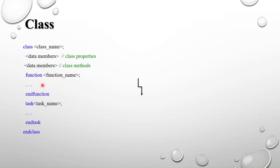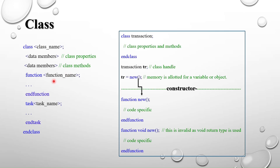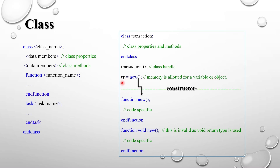Now we will see the constructor. When we write 'class transaction', and then 'transaction tr', that tr is the handle pointing to the transaction class object. We access the data inside using 'tr.data' and similar notation. When we write 'tr = new()', new is a built-in method in SystemVerilog classes that allocates memory for the handle. Before calling new, tr was a handle; after calling new, tr becomes an object with allocated memory.